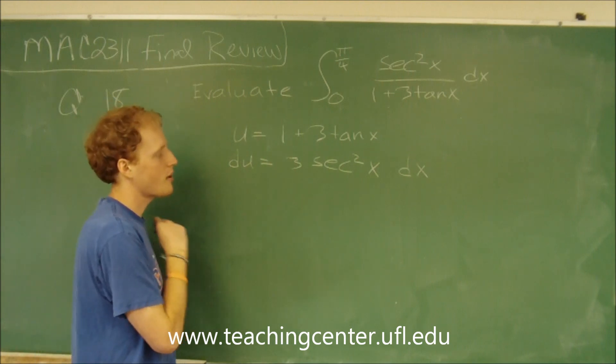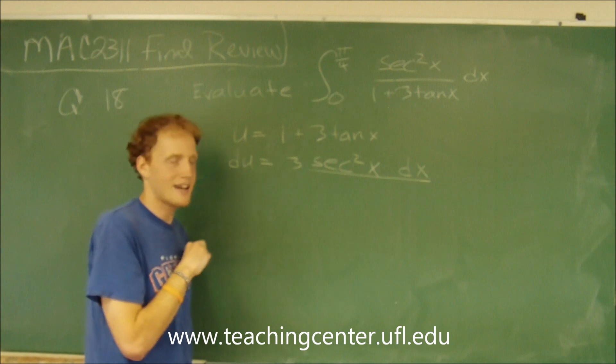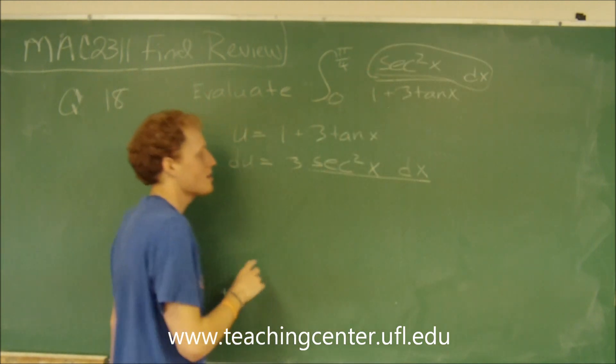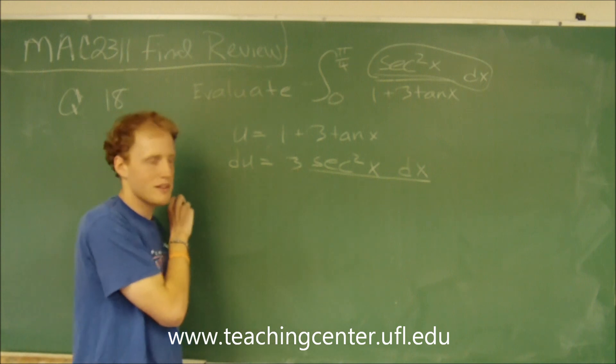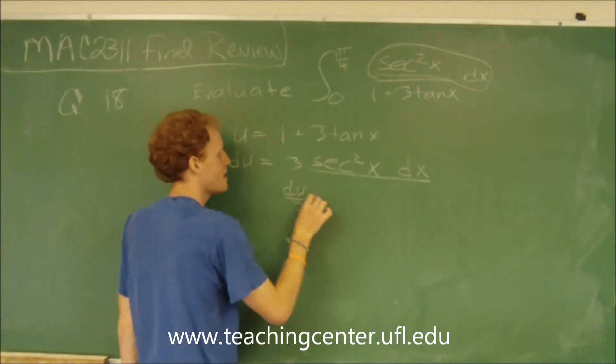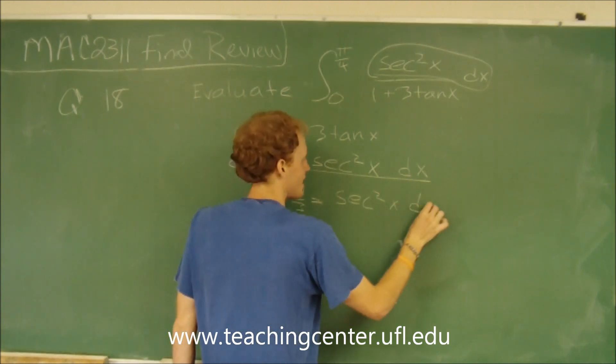So if we look at our problem we see that we have the secant squared of x dx in the problem. So let's go ahead and divide over the 3. So we'll see that du over 3 is going to replace the secant squared of x dx.